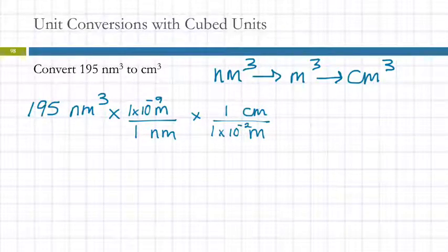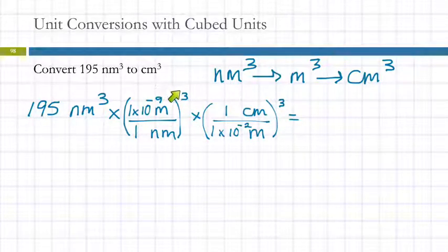Now I do have to acknowledge that my units are cubed. So that means I cube my conversion factors. This cube applies to everything in the parentheses, the numbers and the units. There's parentheses and the three is on the outside, so it applies to everything. Here, there are no parentheses. The three is only on the nanometer, so it only applies to the nanometer. But in this conversion factor, I am cubing my numbers as well.